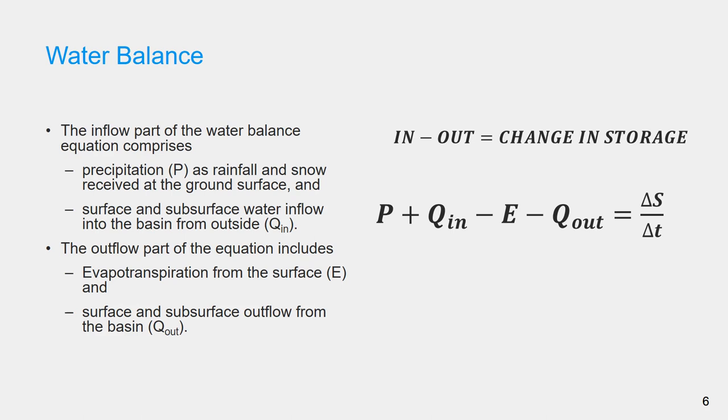The outflow part of the equation includes evapotranspiration from the basin surface, and surface and subsurface outflow from the basin. When the inflow exceeds the outflow, the total water storage increases. An inflow less than the outflow results in decreased storage.